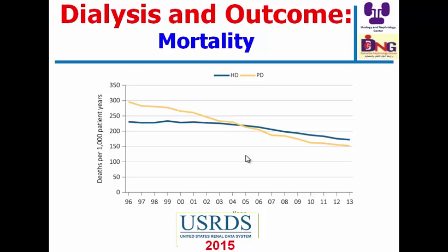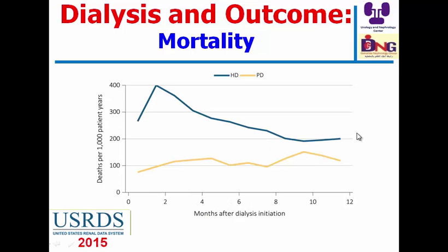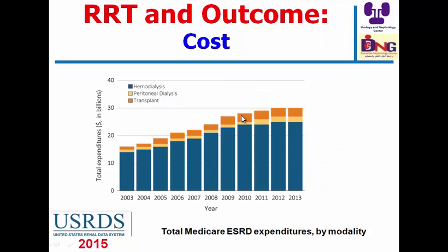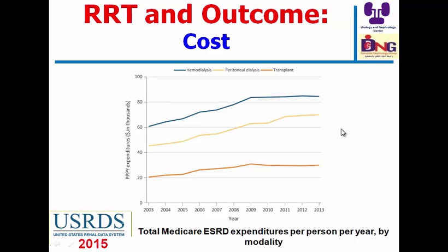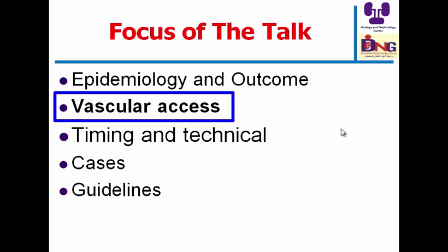Regarding mortality from the USRDS data, the orange color reflects peritoneal dialysis patients and blue reflects hemodialysis. Mortality was higher in peritoneal dialysis but currently mortality in hemodialysis exceeds mortality in peritoneal dialysis. The cost of treatment in the United States increased from 15 billion dollars in 2003 to 30 billion dollars one decade later — the cost is duplicating.